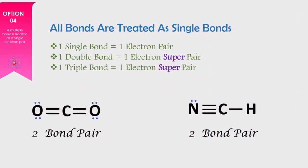The fourth point says that all the bonds in a molecule are treated as single bonds, because a single bond has one electron pair. We can take carbon dioxide and HCN as examples. Although in carbon dioxide there is a double bond present, it will be taken as a single bond — counted as one electron pair, or one electron super pair. The same applies to the HCN molecule.